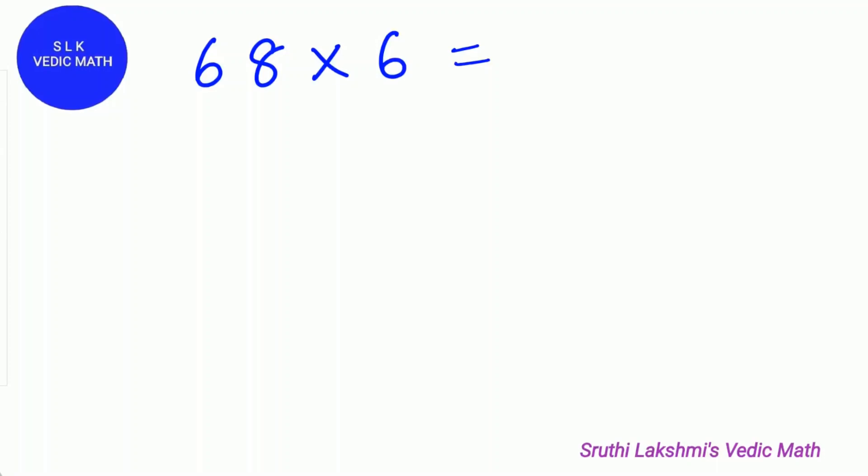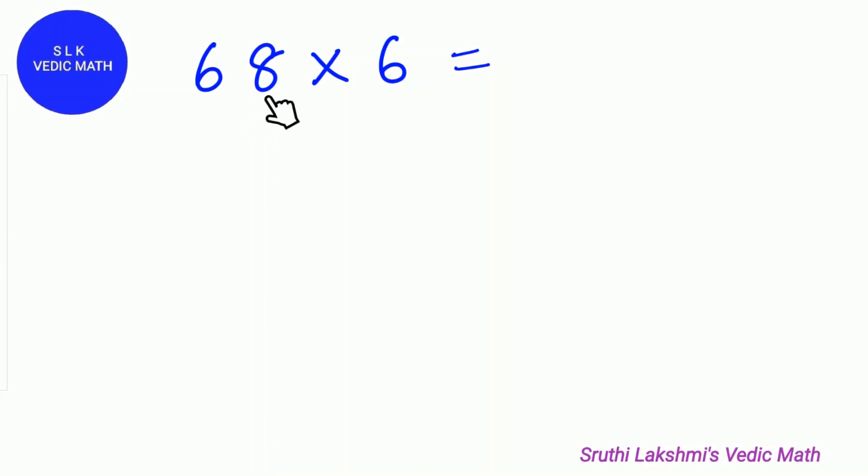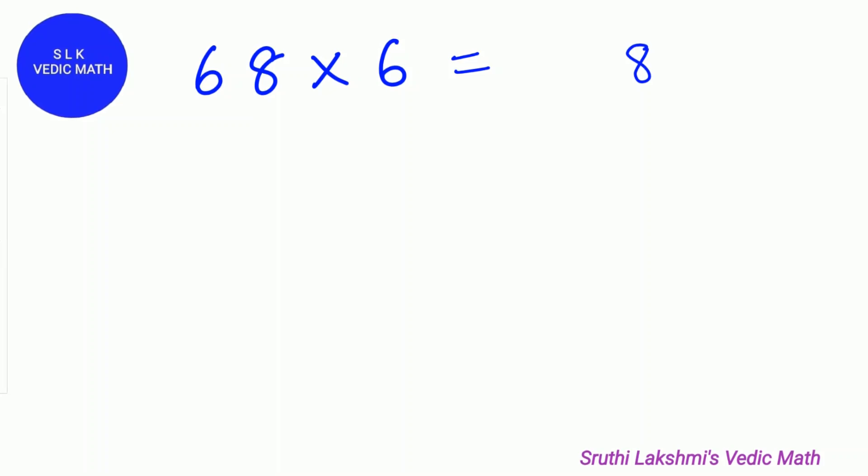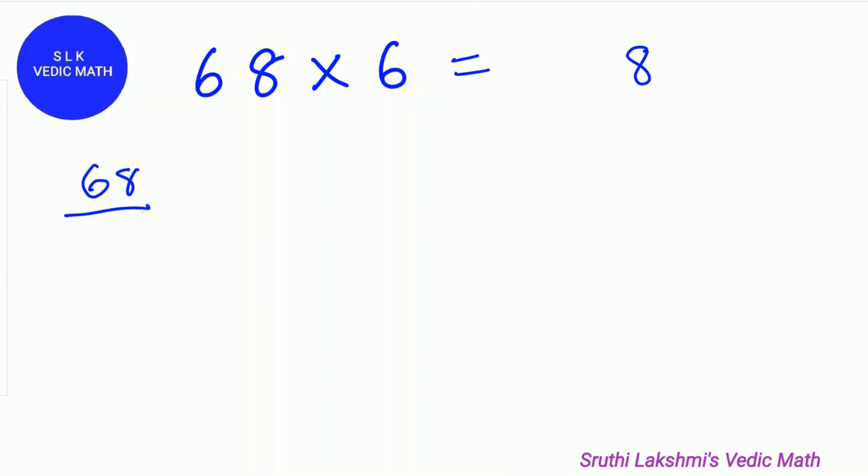Let's try another example. 68 times 6. If it is an even number, 68 is an even number, we write the last digit of that number. So we write 8 as it is. Next, we divide 68 by 2. So 68 divided by 2 is 34.